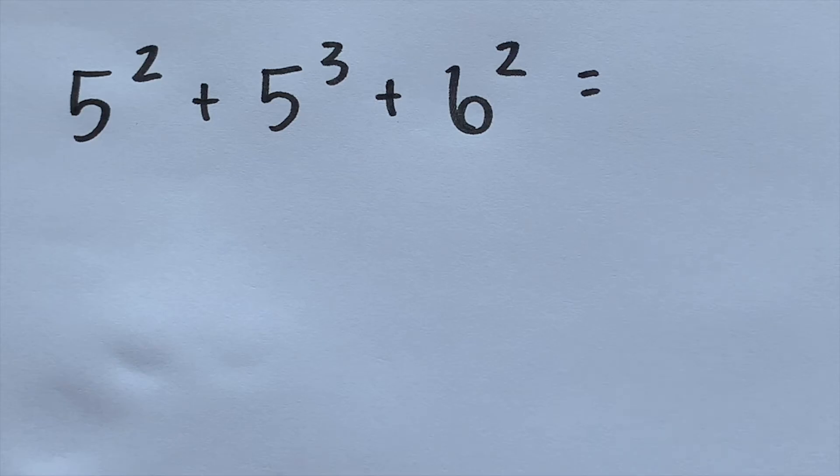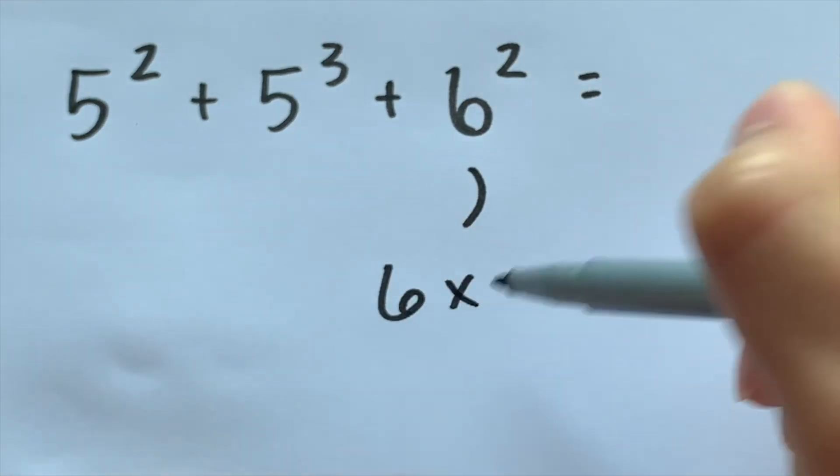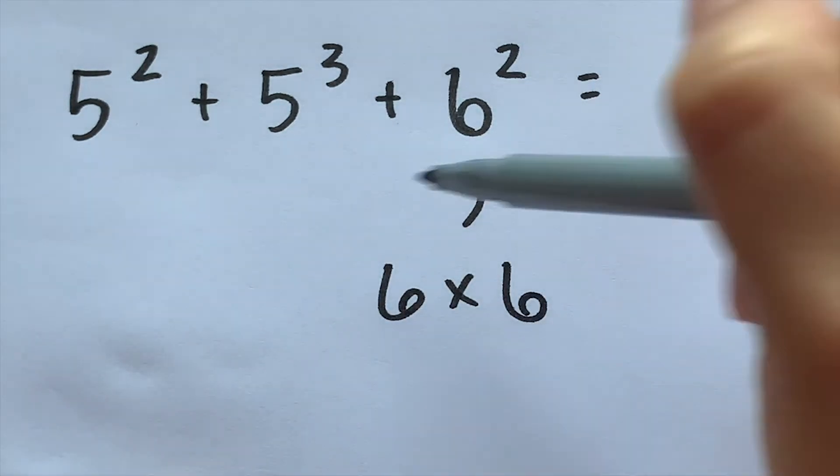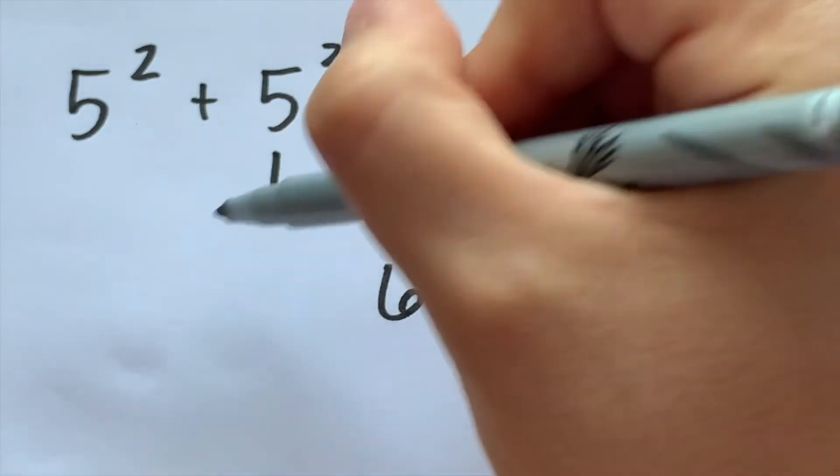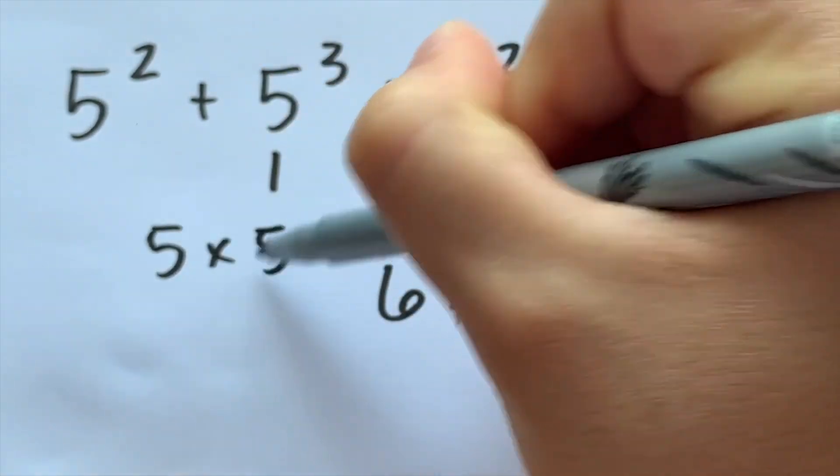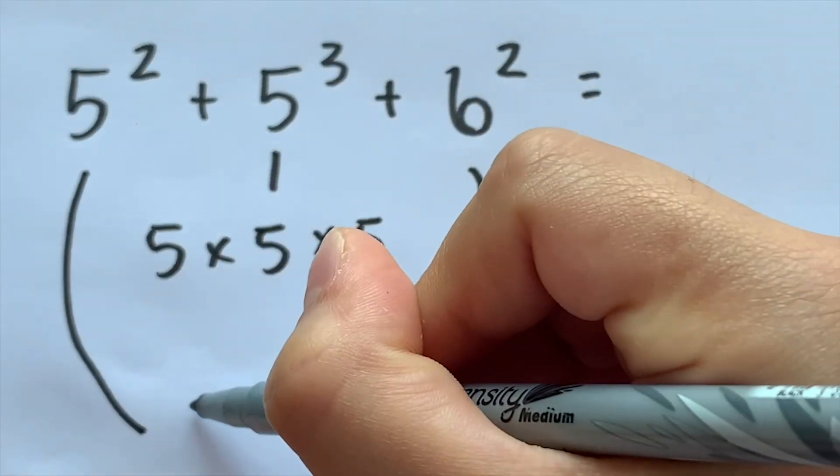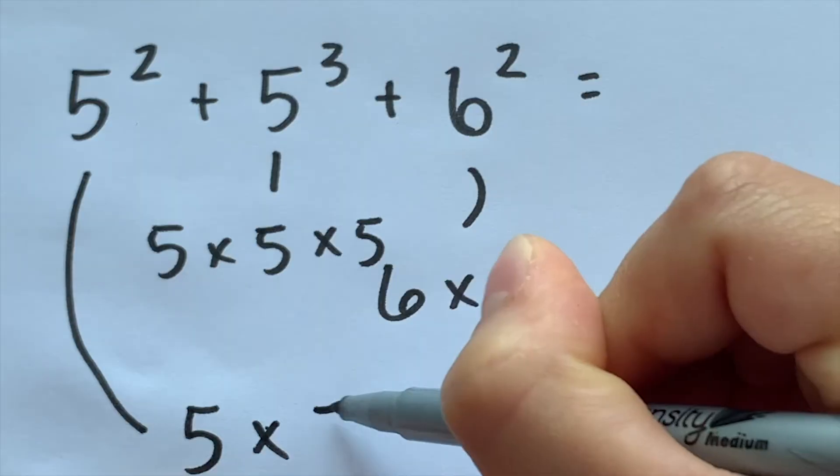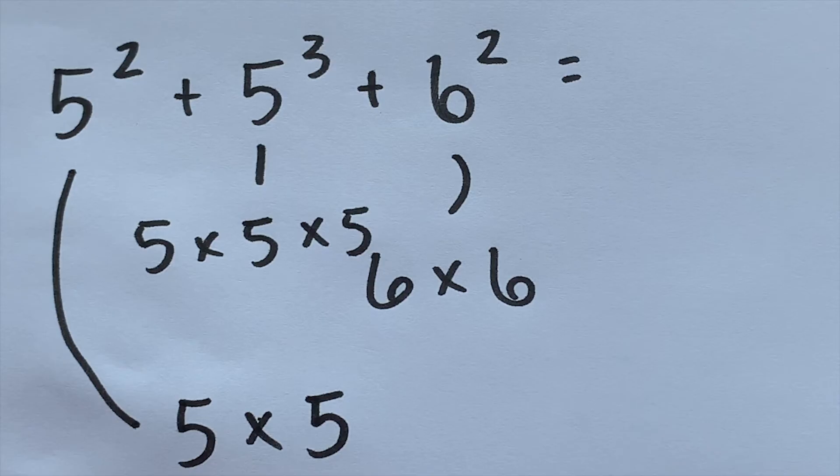Now here we have an even more complicated equation. We have three exponents now that we have to break down. So same process to simplify this, it would be six times six. To simplify this is a little bit harder because now we have an exponent of three. So it'd be five times five times five. And to simplify this one right here, it'd be five times five. So I know I kind of did a mess there. It's kind of everywhere. But so for our first one, we have five times five, which gives us twenty-five.